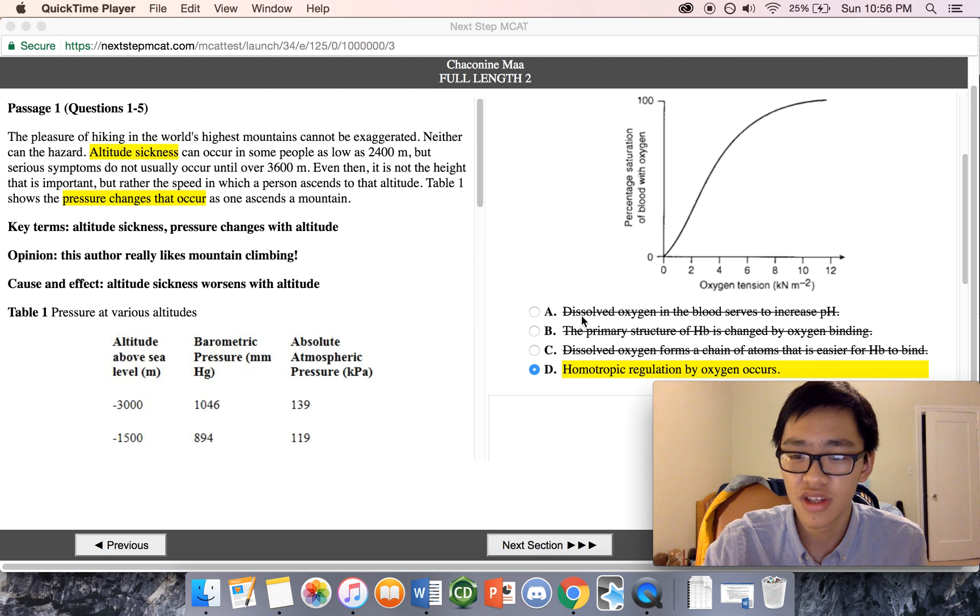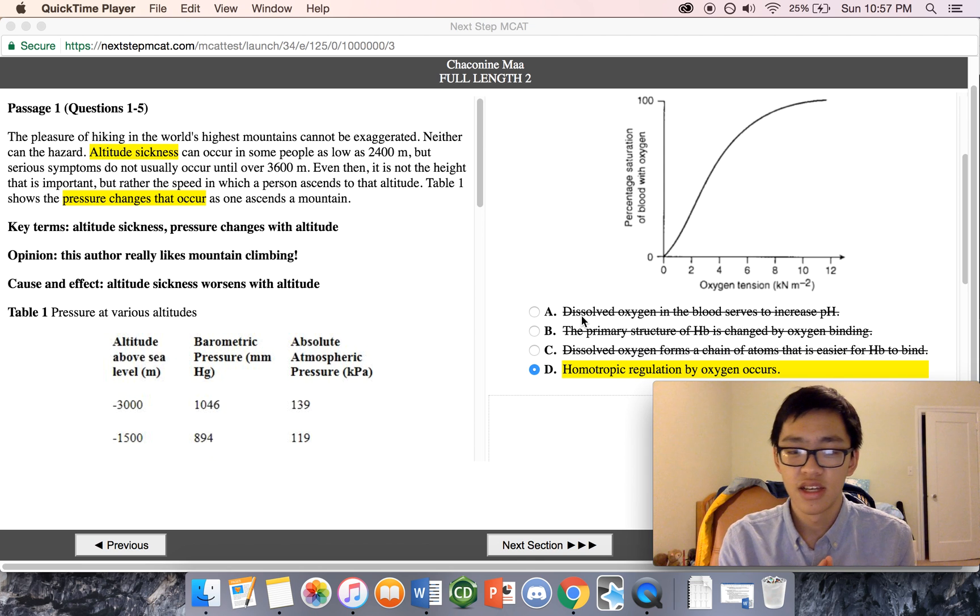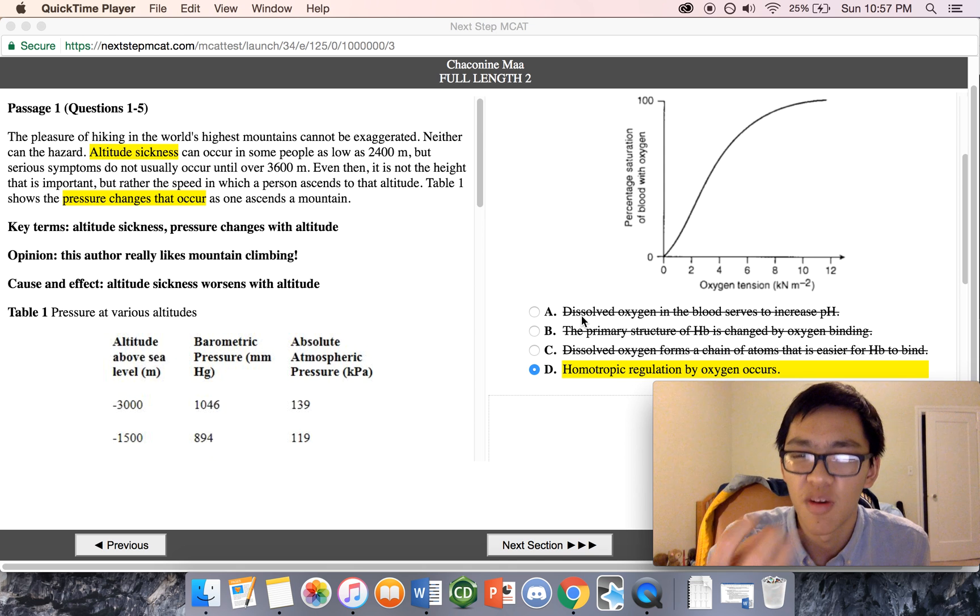And finally, dissolved oxygen in the blood starts to increase pH. This one's also a tricky question. What they're actually looking for is dissolved carbon dioxide in the blood starts to increase pH, because CO2, if you recall, shifts the equilibrium. So CO2 plus water becomes carbonic acid, which in dissociation breaks into H+ ion, which essentially decreases pH. Oxygen I believe doesn't have an effect.